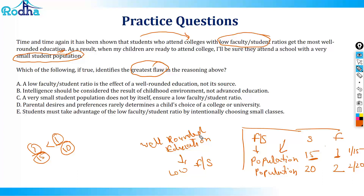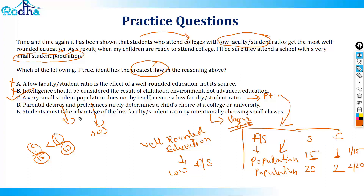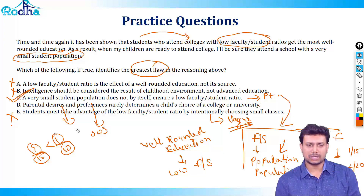The greatest flaw is that you have not done the ratio calculation properly — you've only considered small student population. Looking at options: Option A says low student-faculty ratio is the effect not the source — not a flaw. Option B mentions intelligence — not discussed, gone. Option C says a very small student population does not itself ensure a low student-faculty ratio — that's exactly the point. Options D and E are out of scope. The answer is C.